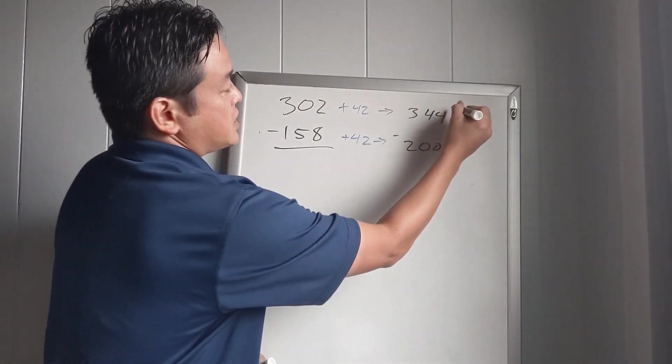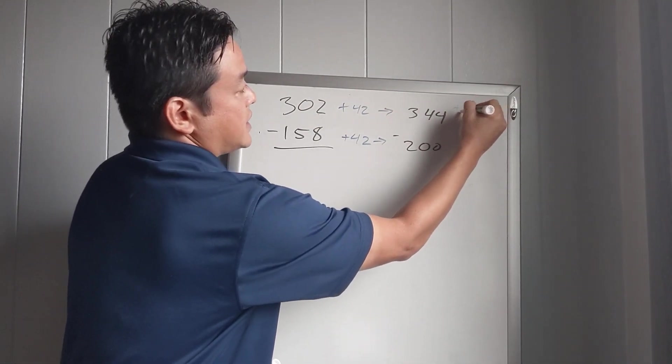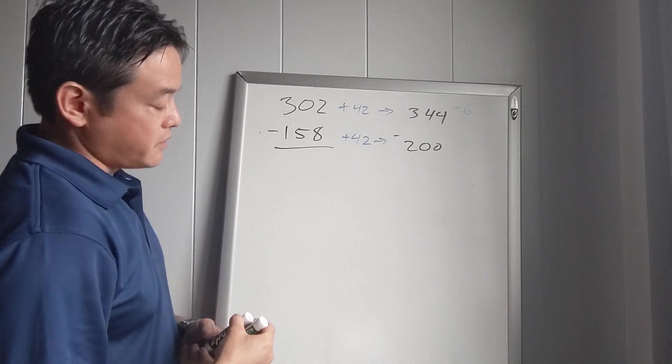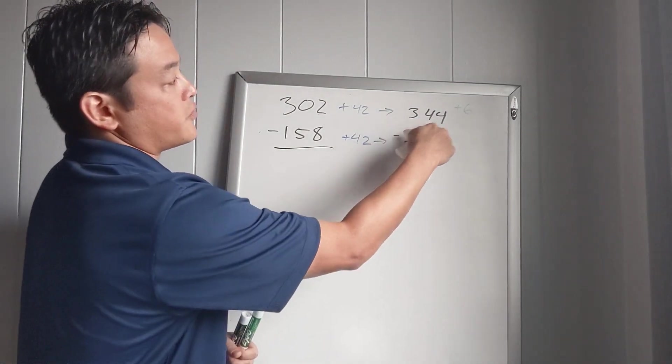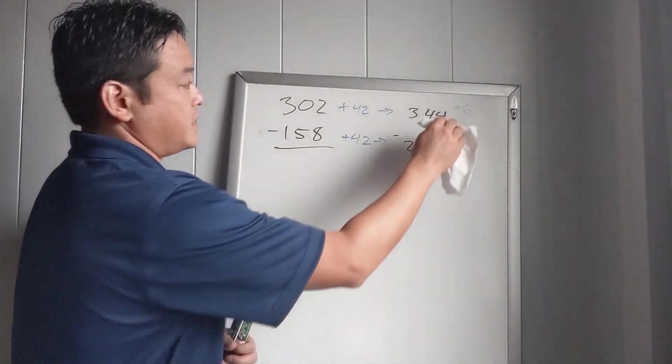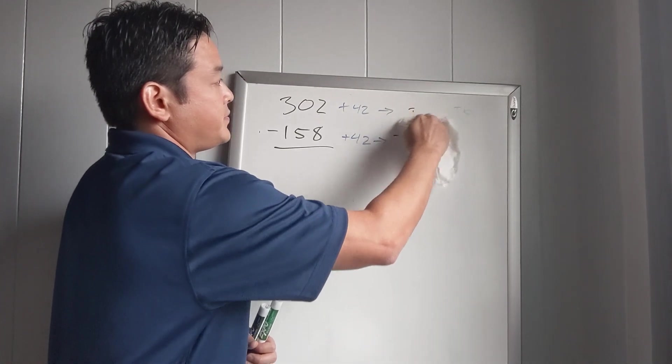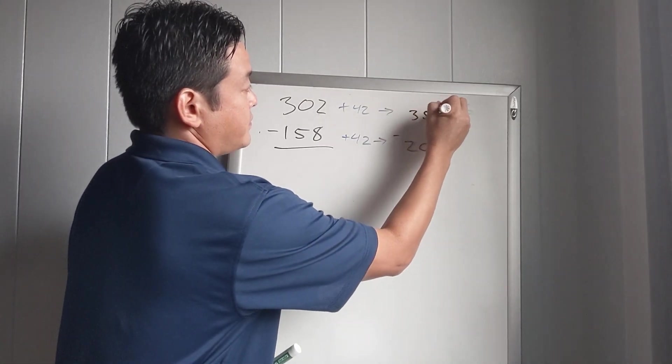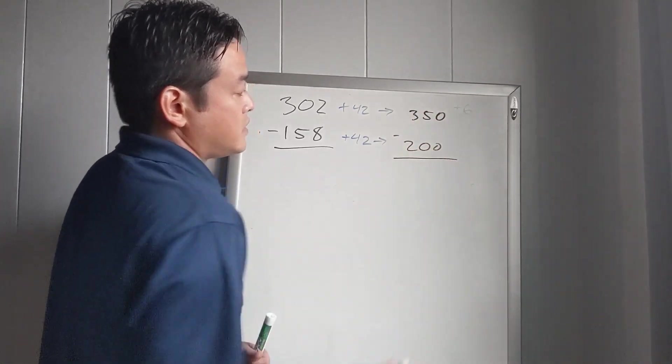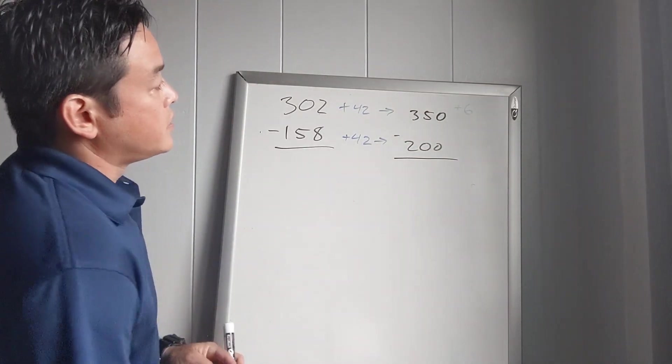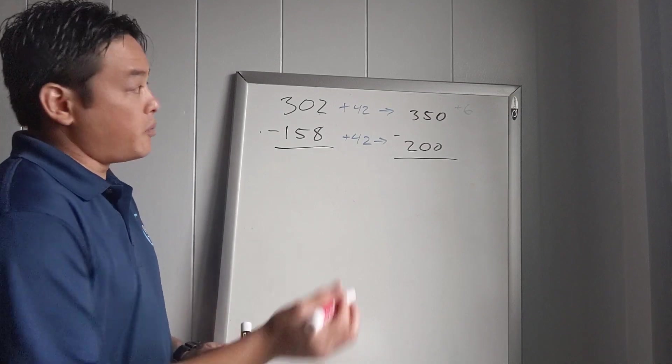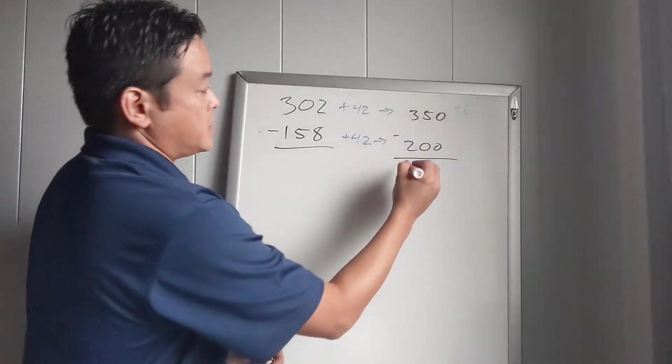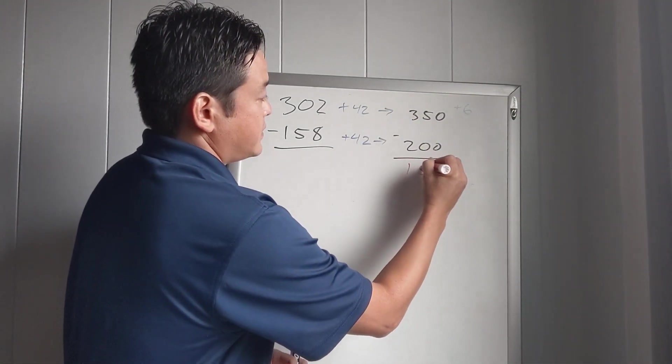So instead, what we'll do is just add 6. And this will change, so 344 plus 6 will give us 350. So now, 350 minus 200 is an easier problem. 350 minus 200 is 150.